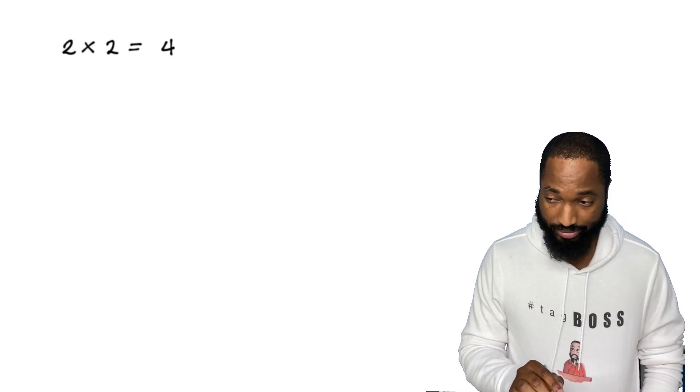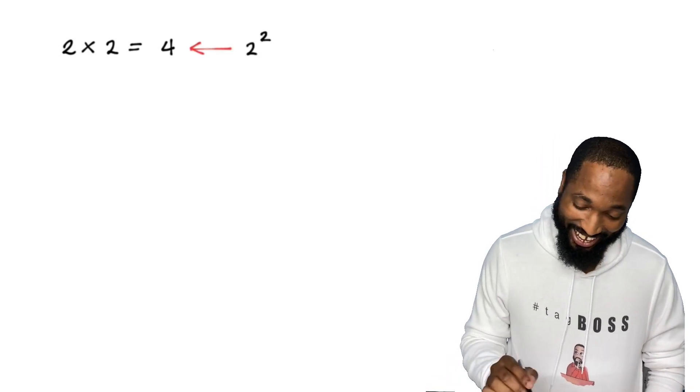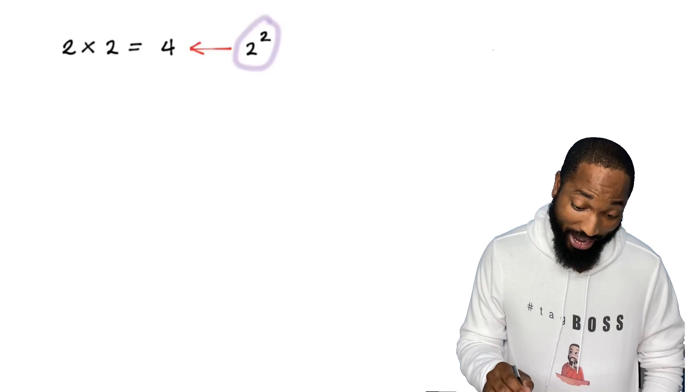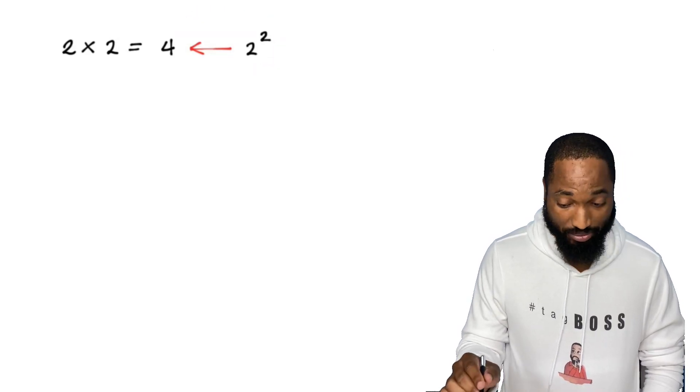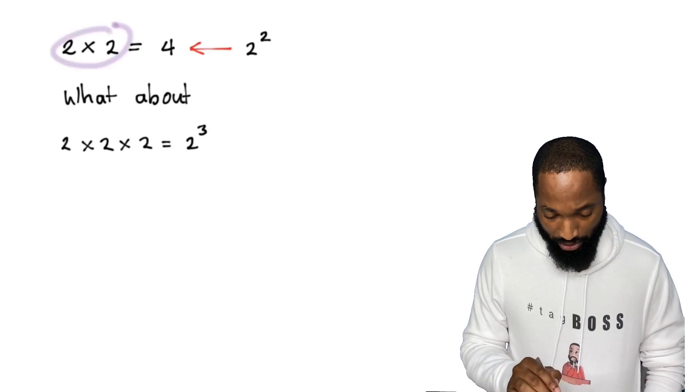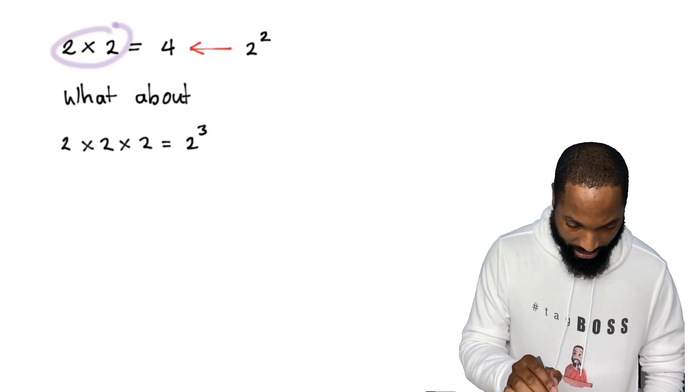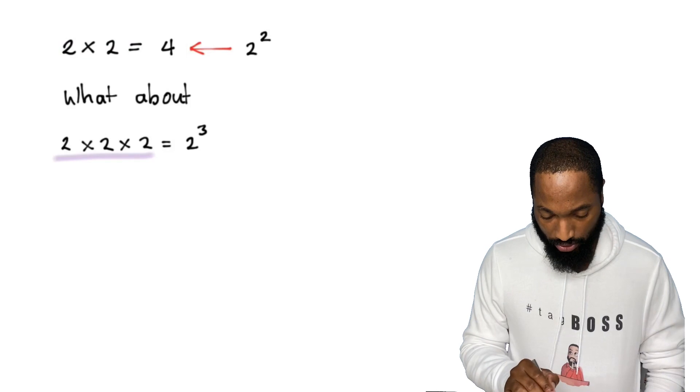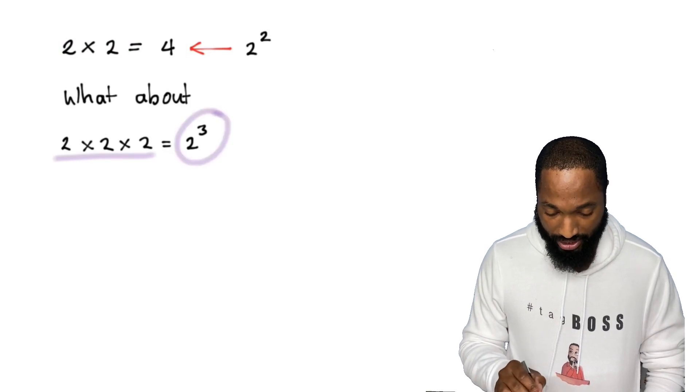Two by two is four. Two squared is another way of writing four. So what about two by two by two? Let me get rid of this. Two by two by two is like two cube.